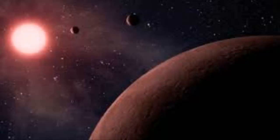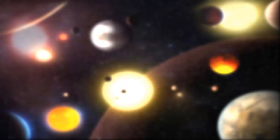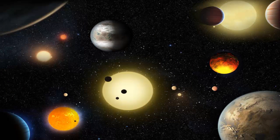Trappist-1 is a small star that is thousands of times less bright than our Sun. It burns hydrogen so slowly that it will exist for trillions of years.